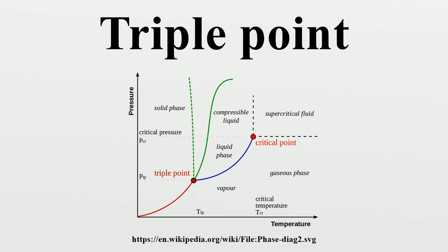The term triple point was coined in 1873 by James Thomson, brother of Lord Kelvin.